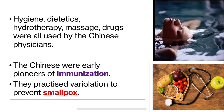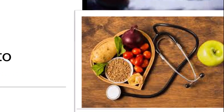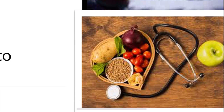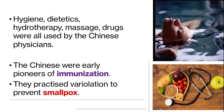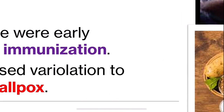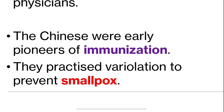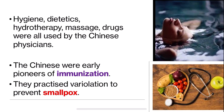Hygiene, dietetics, hydrotherapy, massages and drugs were used by Chinese physicians. Dietetics is a good, healthy nutritious diet which maintains good health. Hydrotherapy is a method which uses water to treat diseases. The Chinese were also early pioneers of immunization — they practiced variolation to prevent smallpox. Variolation is immunizing patients by infecting them with a mild form of the disease, similar to vaccination. It is an old term for vaccination.